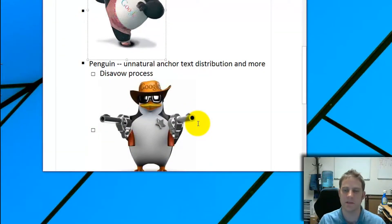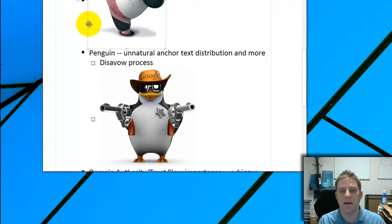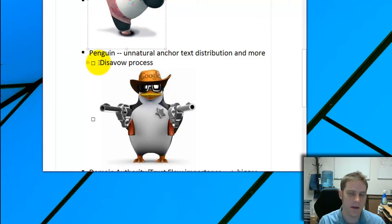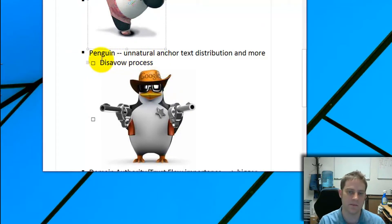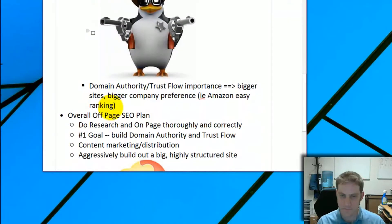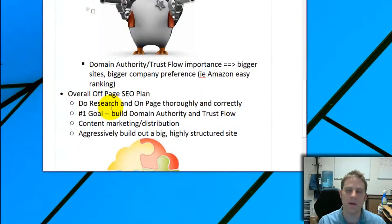Penguin was the update that really got good at catching unnatural anchor text distributions. It doesn't do quite as much as Panda, but it does a lot. To recover from a Penguin penalty you need the disavow process. If your site has been penalized, feel free to contact me — I'm very good at getting things unpenalized.